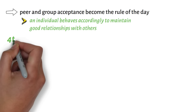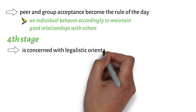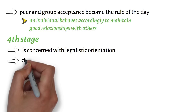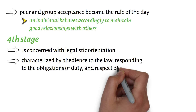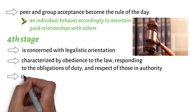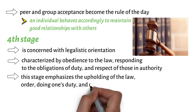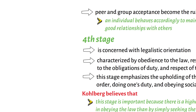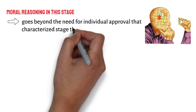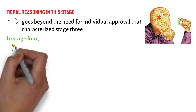The fourth stage is concerned with legalistic orientation. This stage, according to Kohlberg, is characterized by obedience to the law, responding to the obligations of duty, and respect for those in authority. Hence, this stage emphasizes the upholding of the law, order, doing one's duty, and obeying social norms. Kohlberg believes this stage is important because there is a higher value in obeying the law than in simply seeking the approval of one's peers. Moral reasoning in this stage goes beyond the need for individual approval, and children obey the law because of its importance in maintaining a well-functioning society.